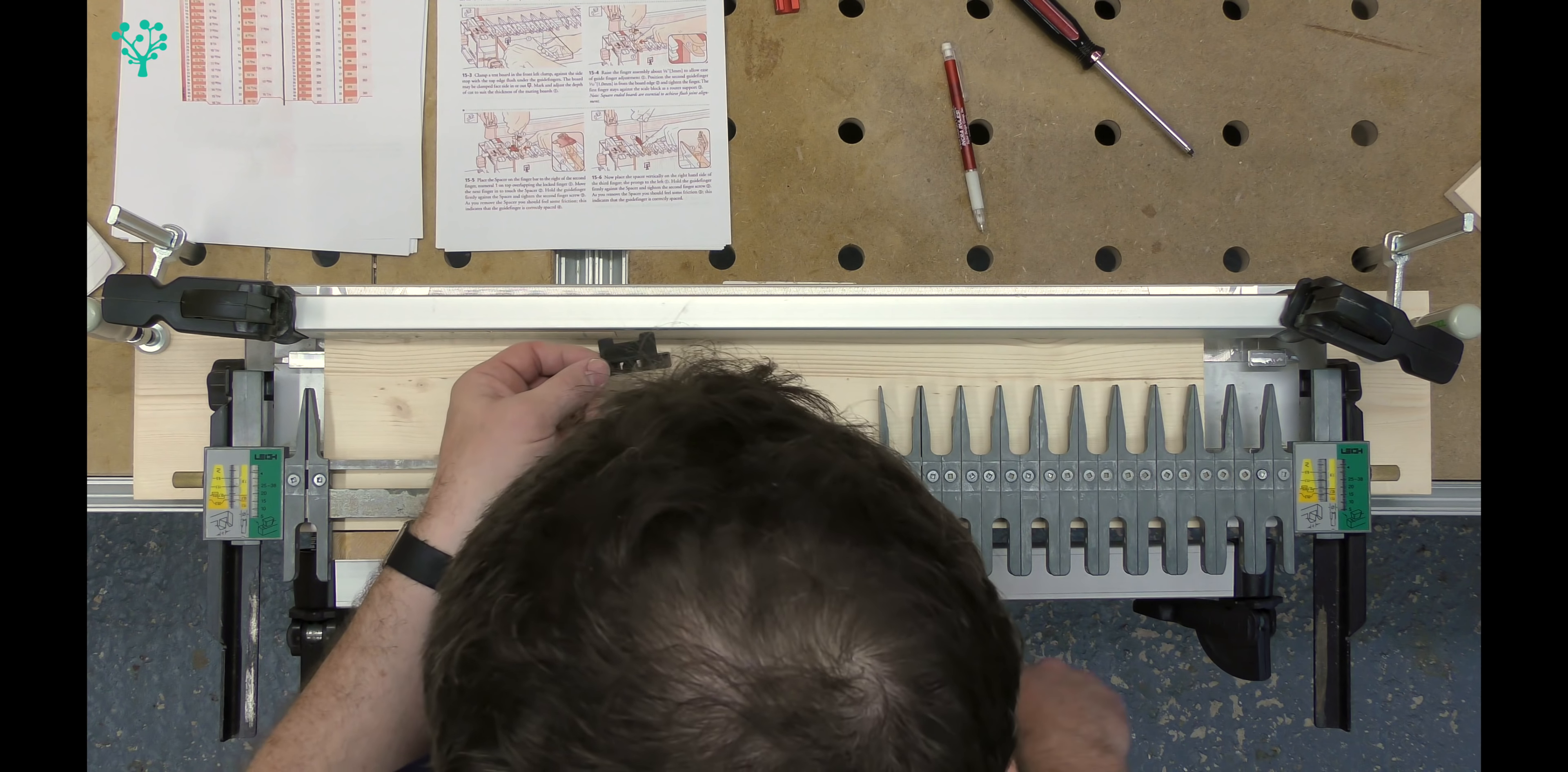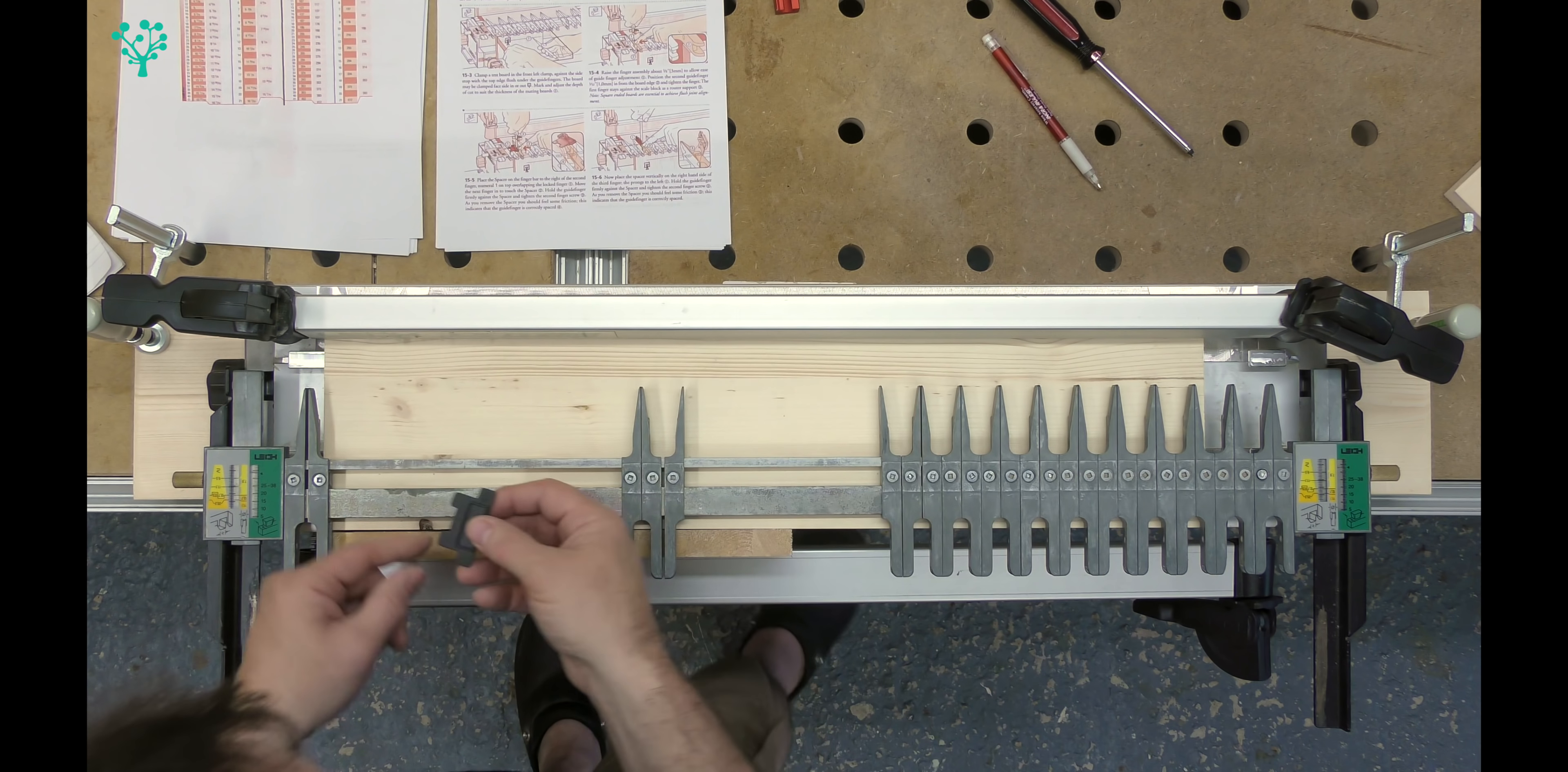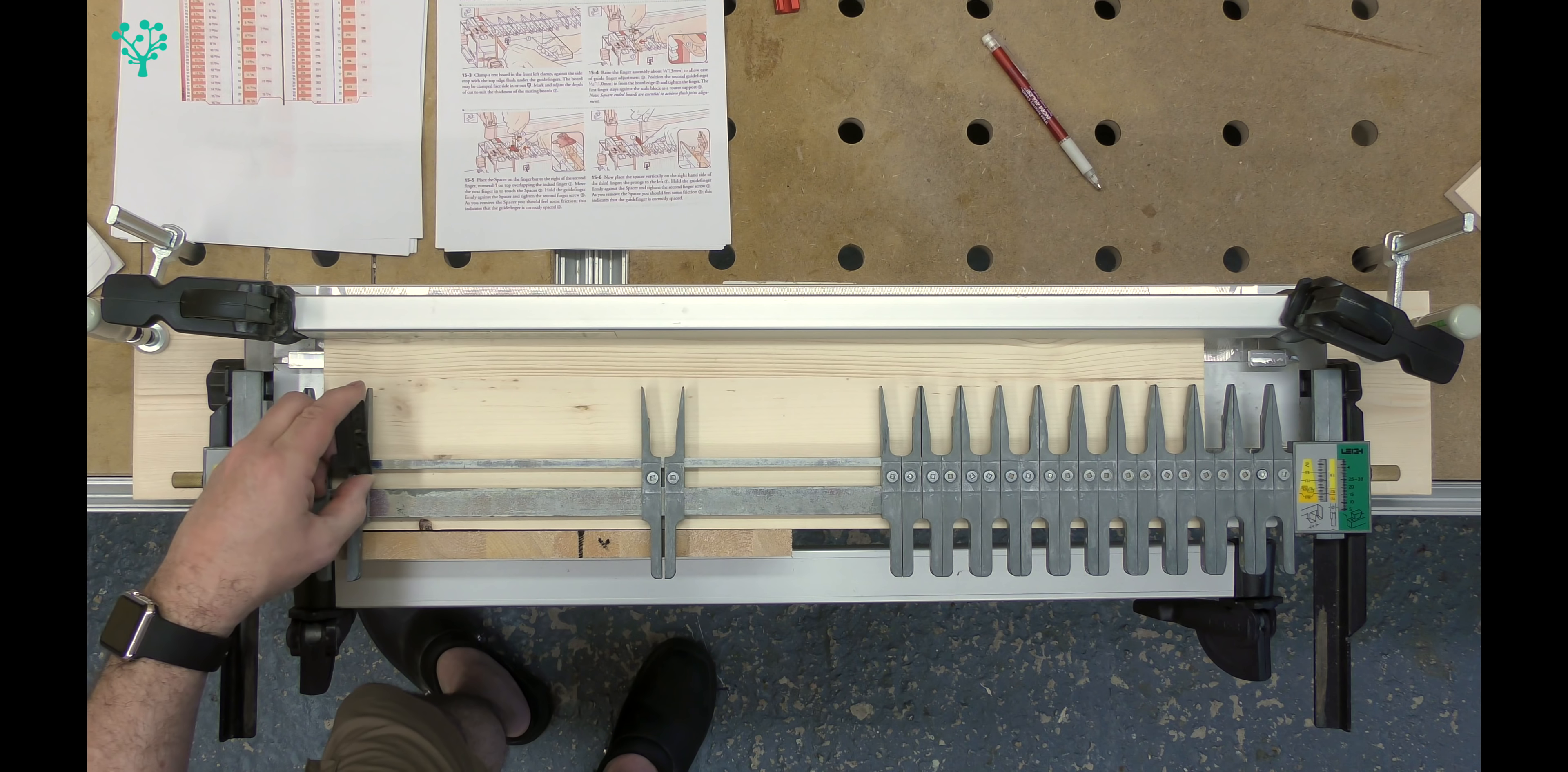You're now looking for this black piece of plastic. Two of these came in the kit. You can see that this one has a dovetail shape in it and this one has a square shape. Obviously we're not using the dovetail one, we're using the square one. You start by overlapping this finger with the number one. Take your second finger and slide it up to the template. Hold that firmly against and then lock that into place. You should be able to take this out with some resistance but it shouldn't be too tight.